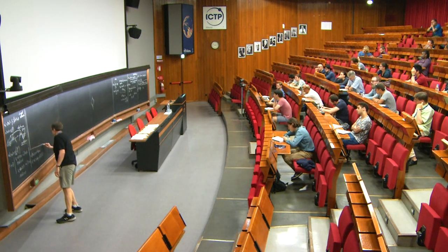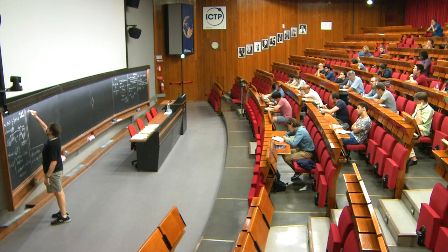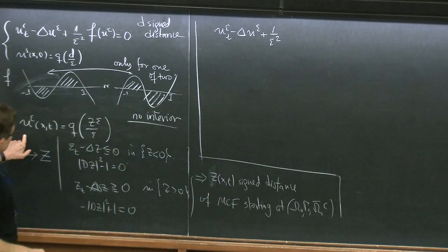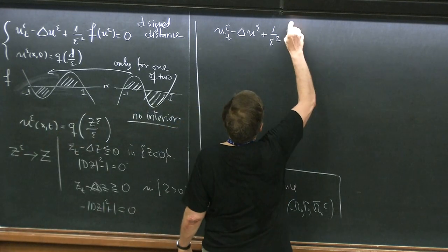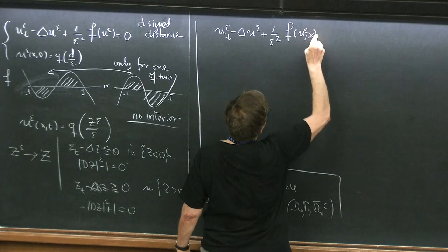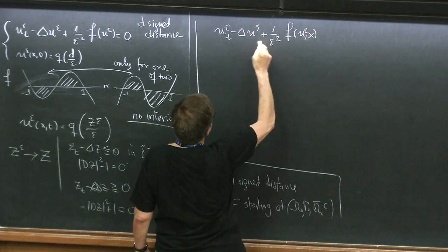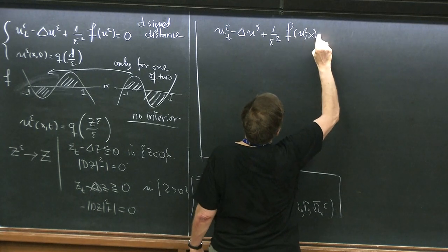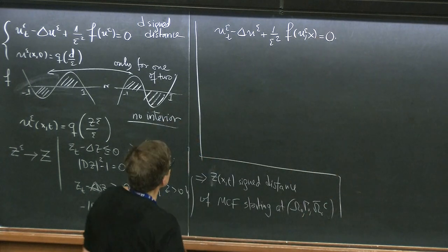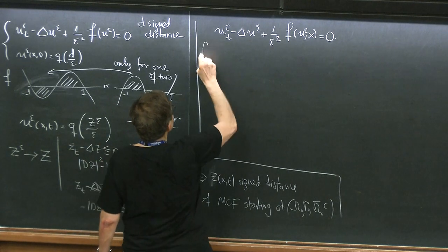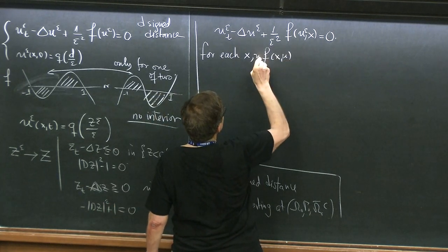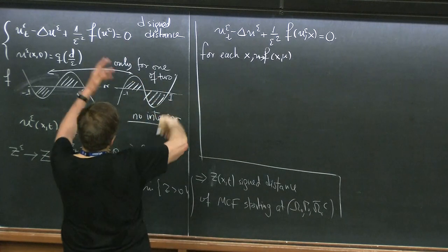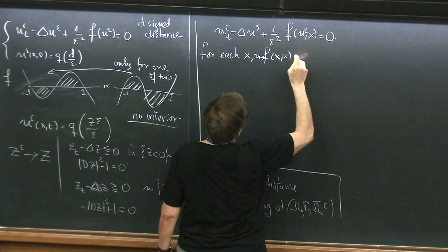Now I want to write down a more complicated — fake — problem with an x-dependence, to show you that the previous approach doesn't work and show you how to fix it. I'm going to put here an x-dependence, and maintain that for each x, f of x, u has the same qualitative form — the equilibria are the same.